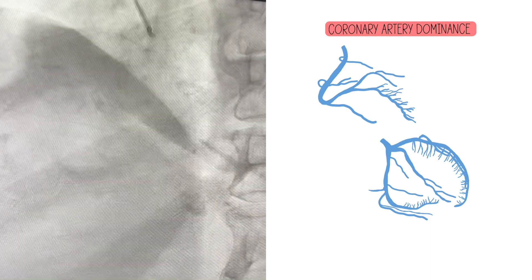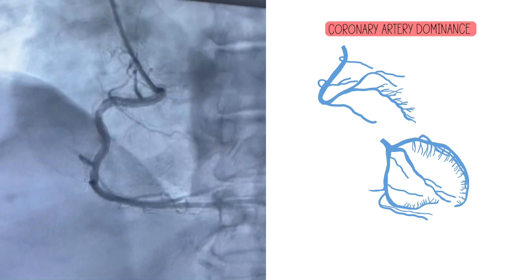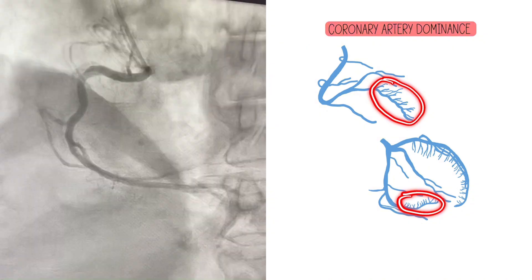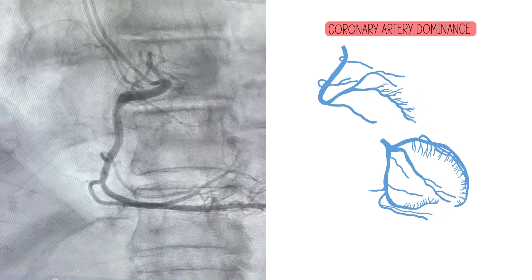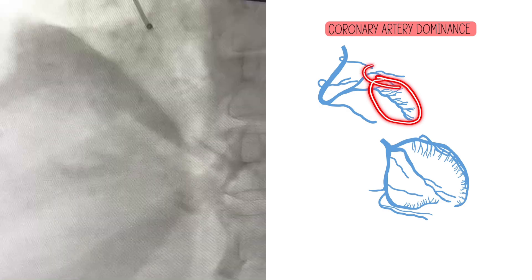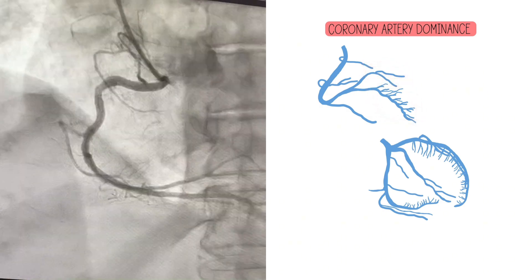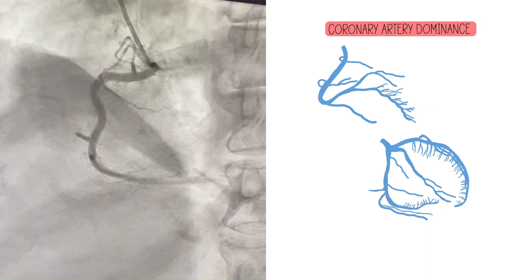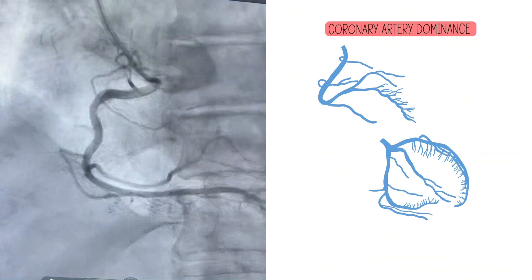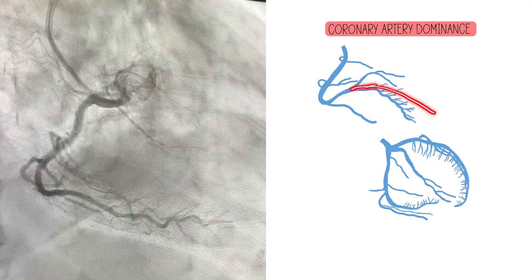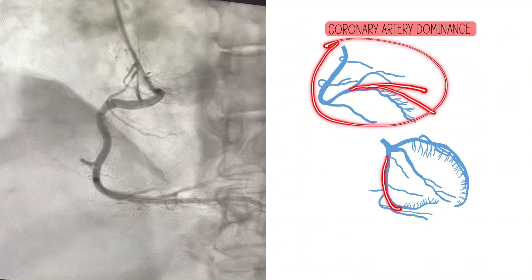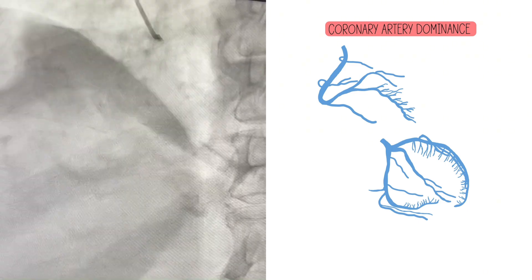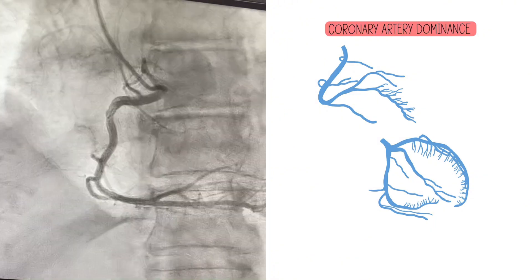Coronary artery dominance is most commonly determined by the location of the PDA — the posterior descending artery — which is the other branch besides the LAD that has septal perforators. But it's actually determined by the location of both the PDA and the posterior lateral branch. Dominance really means how much territory one vessel is covering and how important it is. If both the PL and the PDA are shared between the RCA and the circumflex, those are co-dominant vessels.